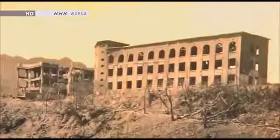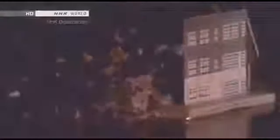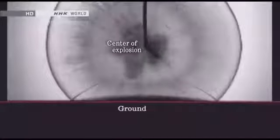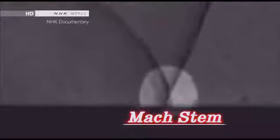Standing there at the time was a reinforced concrete building — the Shiroyama Primary School. 138 people, including teachers and students, lost their lives here. How did the nuclear blast kill those inside the building? The simulation indicated the blast penetrated the structure in just one-tenth of a second.